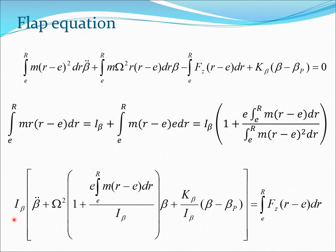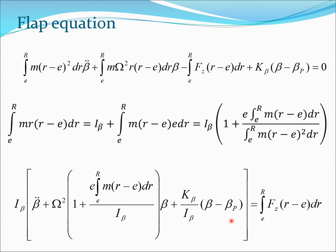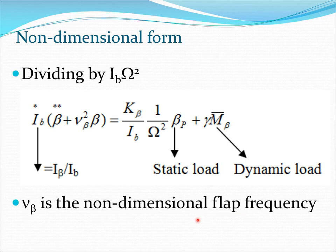Bringing I_beta out of both terms, we write the full equation of motion. The beta-double-dot term comes from the inertia, the beta term includes centrifugal force content and the k_beta stiffness contribution, and then there is the beta_p forcing term. We define a new quantity I_beta-star as I_beta divided by I_b, and normalize everything by dividing throughout by I_b·Omega-squared.